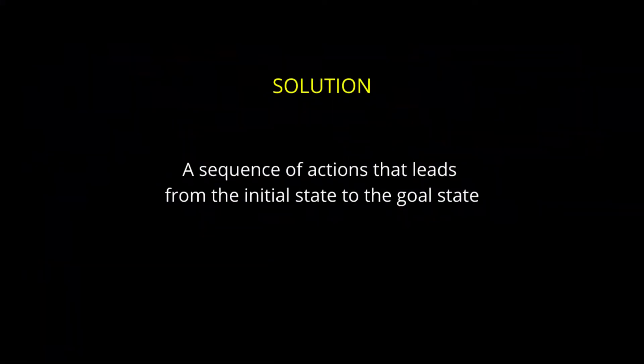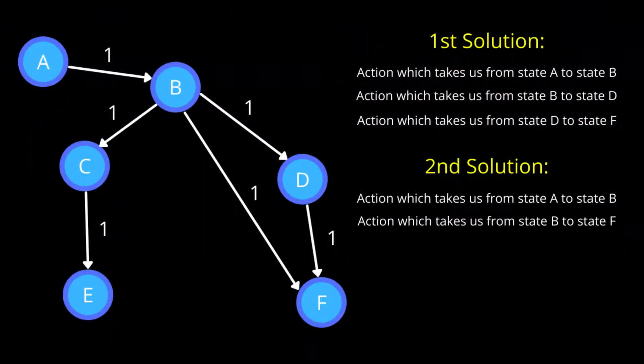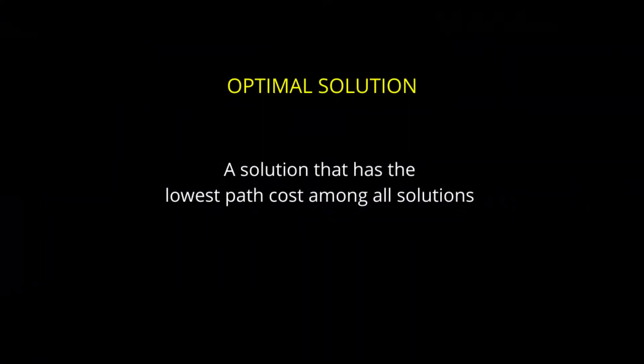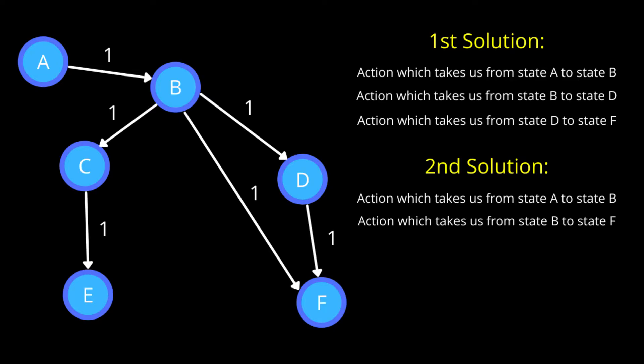A sequence of actions that leads from the initial state to the goal state is known as a solution. If state A is the initial state and state F is the goal state, then two possible solutions exist. A solution that has the lowest path cost among all solutions is known as the optimal solution. In this example, the path cost of the first solution is 3 and the path cost of the second solution is 2. Hence, the second solution is the optimal solution.